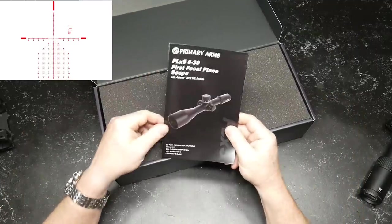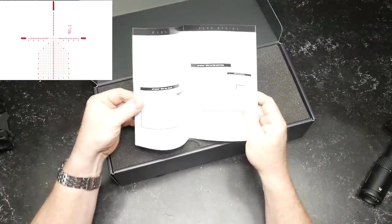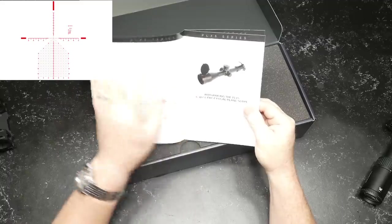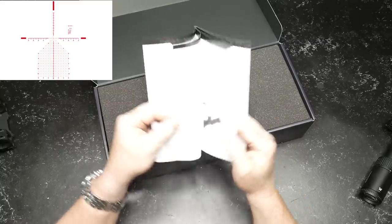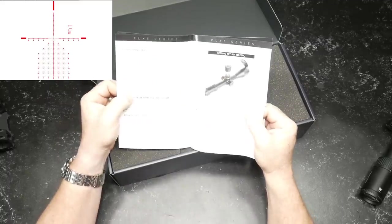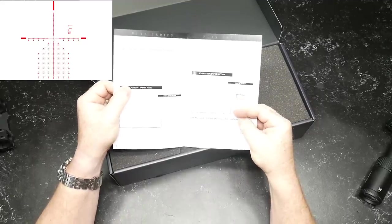Let's open this guy up. You're going to get an instruction manual just like this showing you all the cool things, the Athena reticle, all the different options on the scope and what it entails. It'll also go over battery replacement, resetting, and doing a zero stop on the turrets.